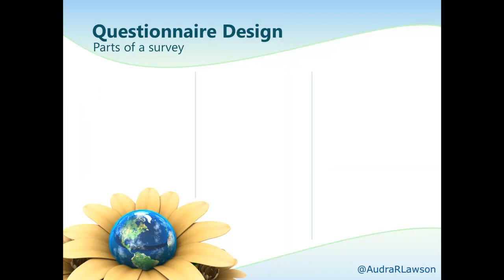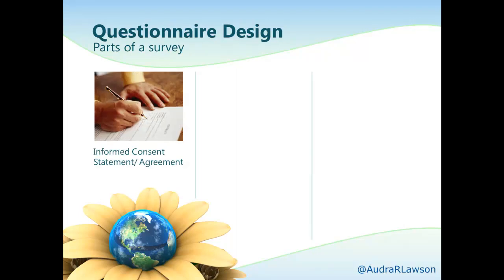In terms of the parts of a survey, there are three parts to discuss. The first is the informed consent statement or agreement. No matter the research you're doing, you have to give your respondents enough information about the project that they can determine whether it's in their best interests to participate. This is an opportunity to establish the study's credibility, interest, and relevance to your respondents.